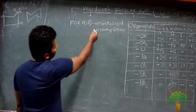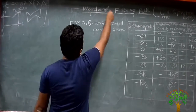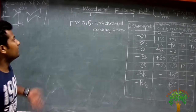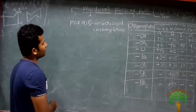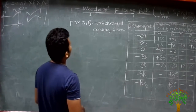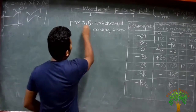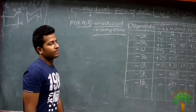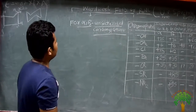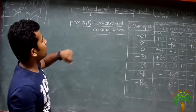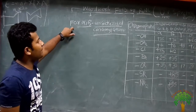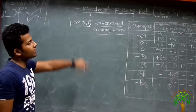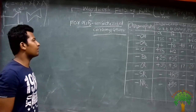Let's calculate the Woodward-Fieser rule for the diene system. Now we calculate the Woodward-Fieser rule for alpha-beta unsaturated carbonyl. This rule implies calculating the lambda max value for alpha-beta unsaturated carbonyl.